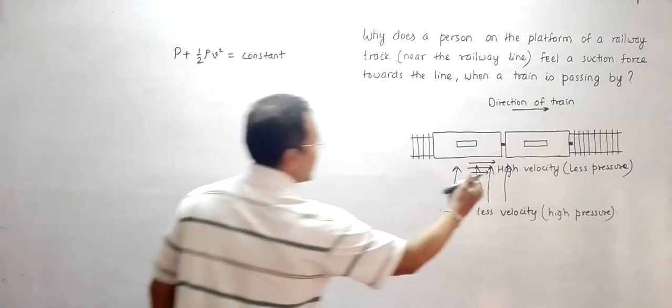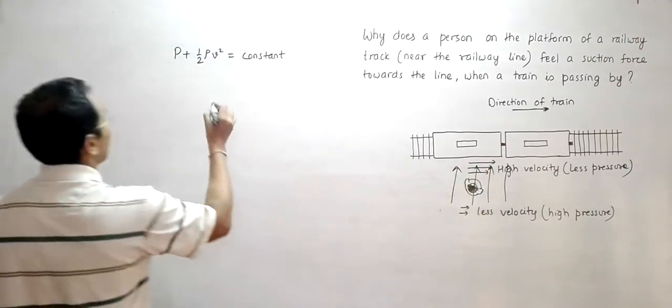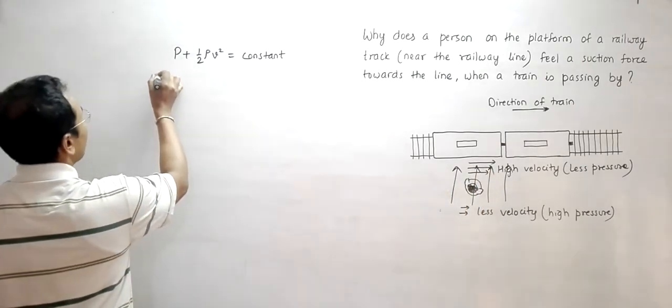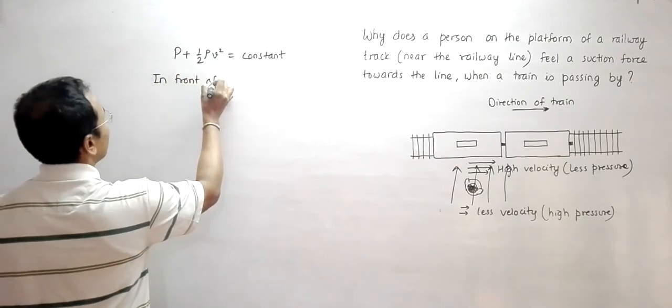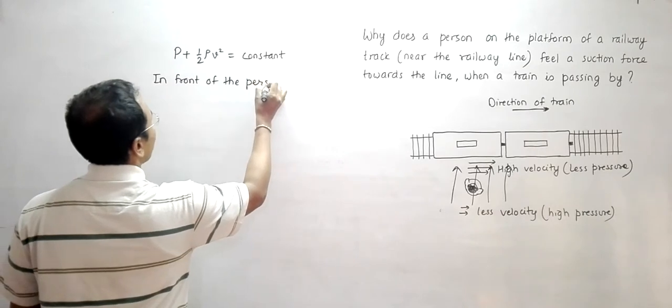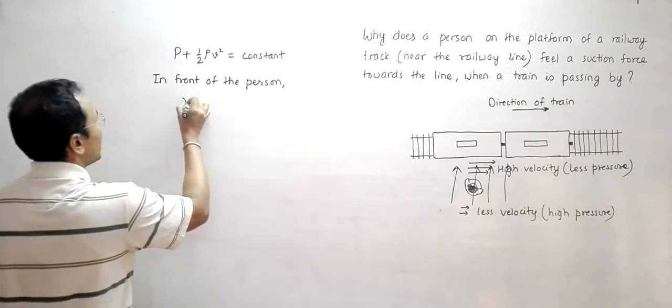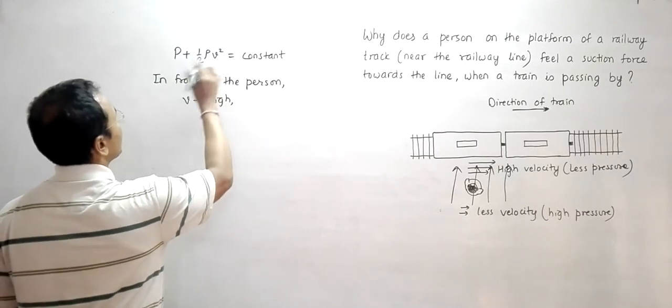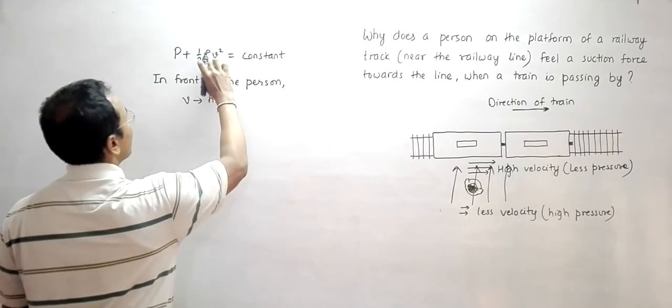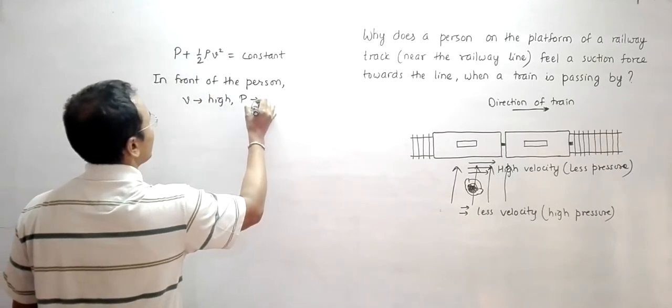So now in this region, in front of the person, the velocity is high. If the velocity is high, then from this equation, since rho should be constant, we must have p should be less.